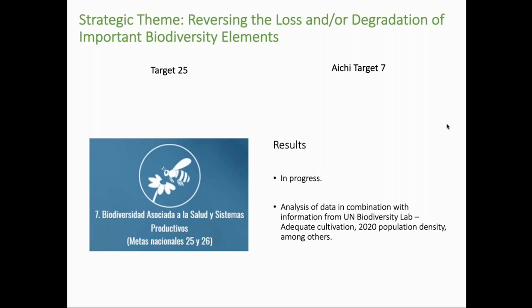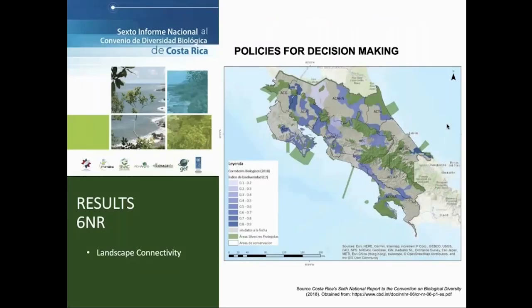Finally, the theme of biodiversity associated with health and production systems: goal 25 establishes that by year 2020 there will be a geographical characterization and identification of the main agroecosystems. This target relates to Aichi goal 7. The information generated by this process will relate to UN Biodiversity Lab data on crops suitable and population density for 2020, and with this, carry out an increasingly detailed analysis of the country's situation on this topic.